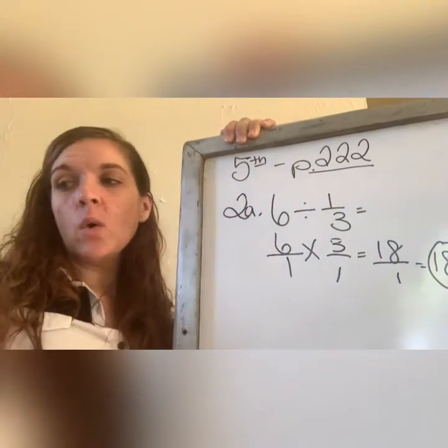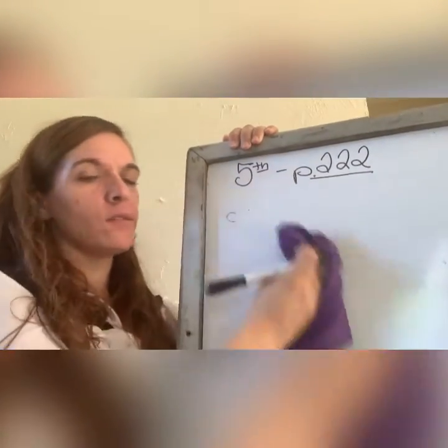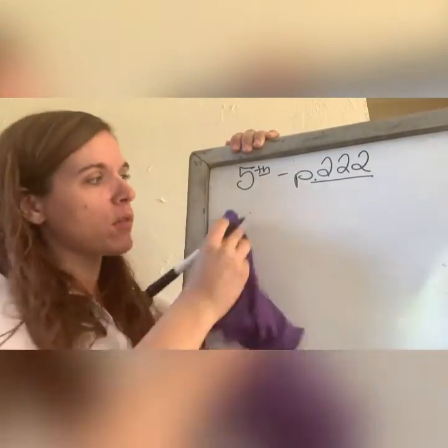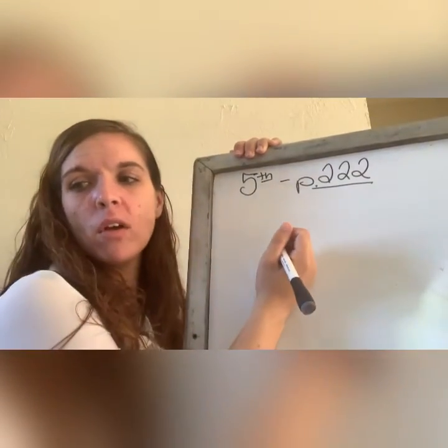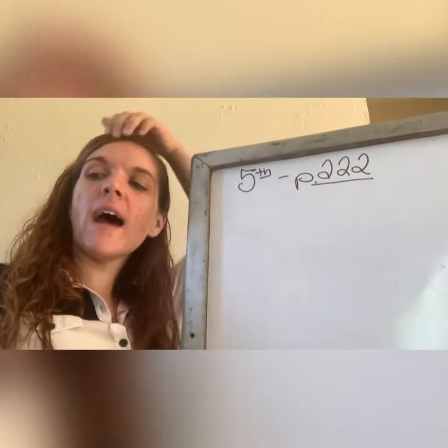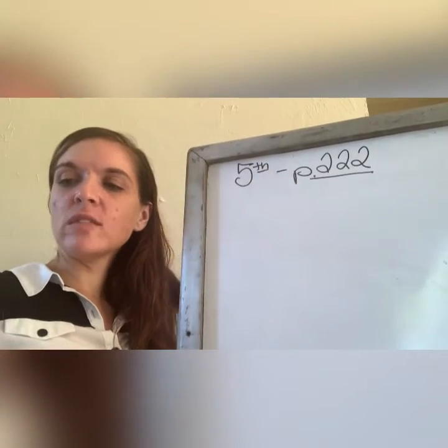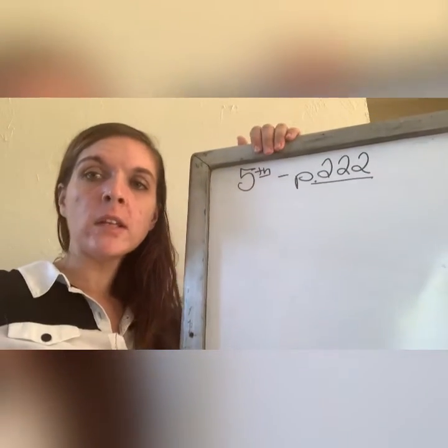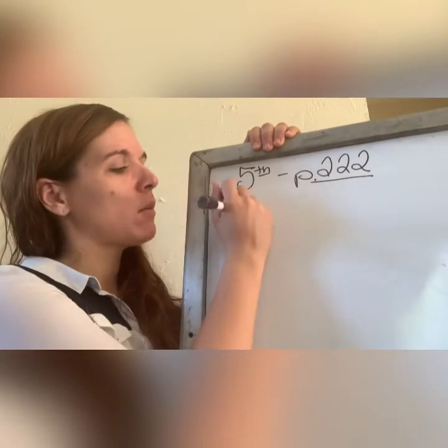When we flip flop and multiply, say it again so you remember. Always flip flop and multiply. You got to be saying that like in your sleep. Look at letter b. By the way, when it says divide using the common denominator method, divide using the inversion method, we don't care about that. One way: flip flop and multiply.